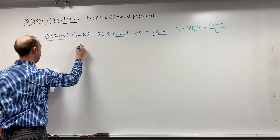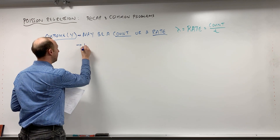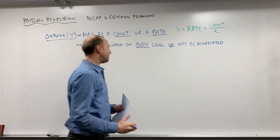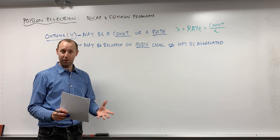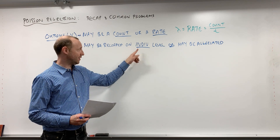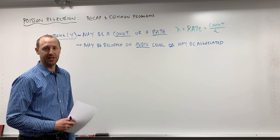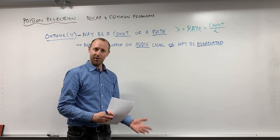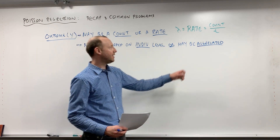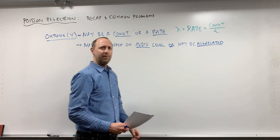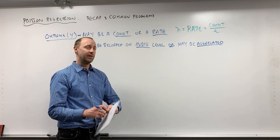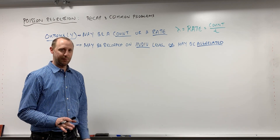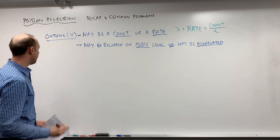The outcome variable may be recorded on an individual level or it might be aggregated. If the event can occur multiple times, we can record data at an individual level — for example, the number of visits to a physician in a year. If the event can only occur once, like birth or death, or it's quite rare, we look at aggregated data, as with the British doctors data examining smoking and lung cancer rates.